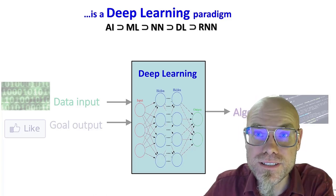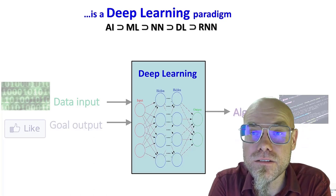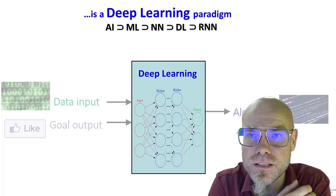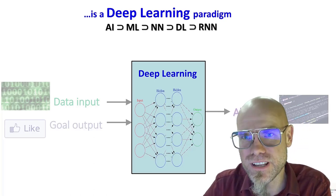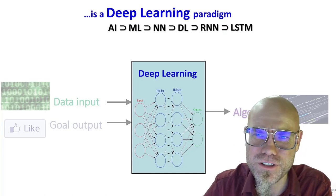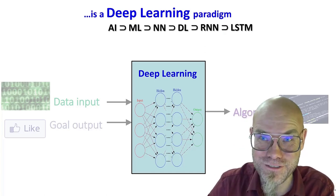For example, recurrent neural nets are very much used in speech recognition. Actually it's a subset of recurrent neural nets which are called long short-term memory, and we will get into that, so no worries.